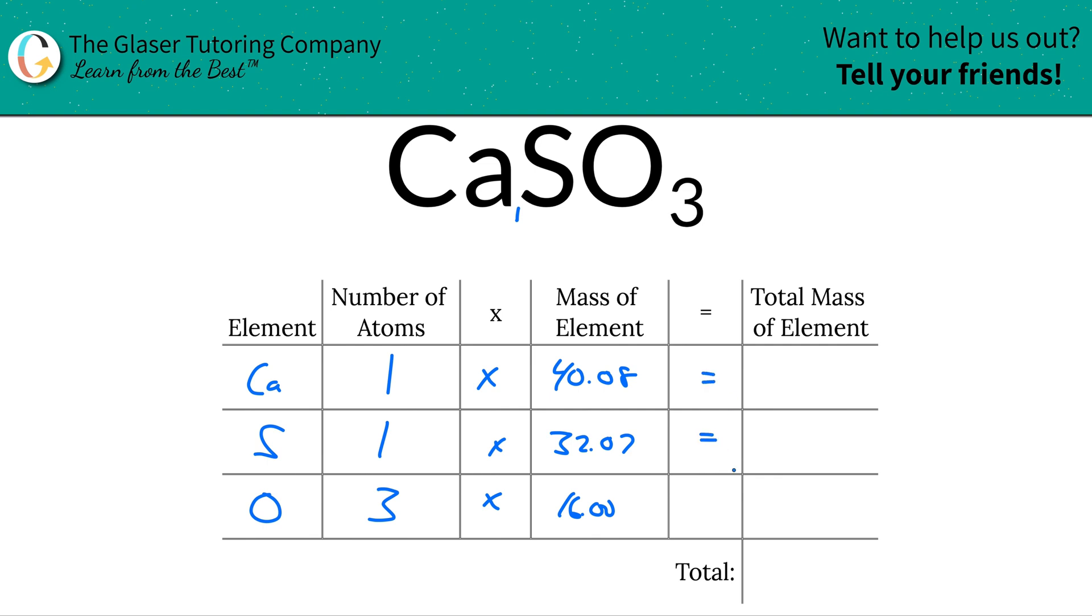Then to find the total mass of each element in the compound, we're going to take the mass of that element and multiply it by the number of atoms of that particular element. So the total mass of calcium here is 40.08. Total mass of sulfur is 32.07. Total mass of oxygen then is 16 times 3, so that works out to be 48.